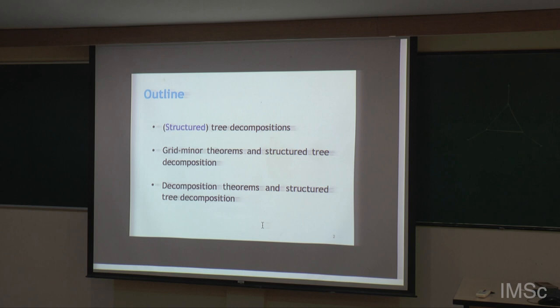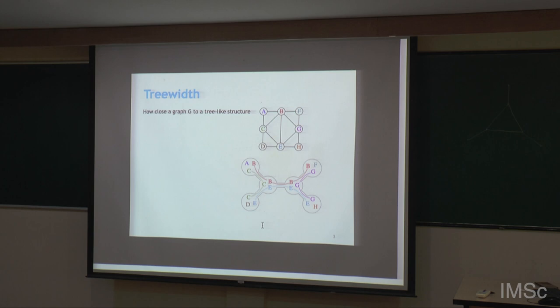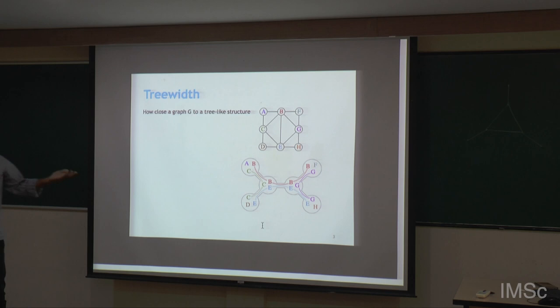We all know what tree width is — it measures how close a graph is to a tree-like structure. For example, for a given graph, this is a tree decomposition: there is a tree and with each node there is a bag associated with it which is a subset of vertices. Each of these bags is a separator in the graph, and that is what we algorithmically exploit when we do dynamic programming over tree decompositions.